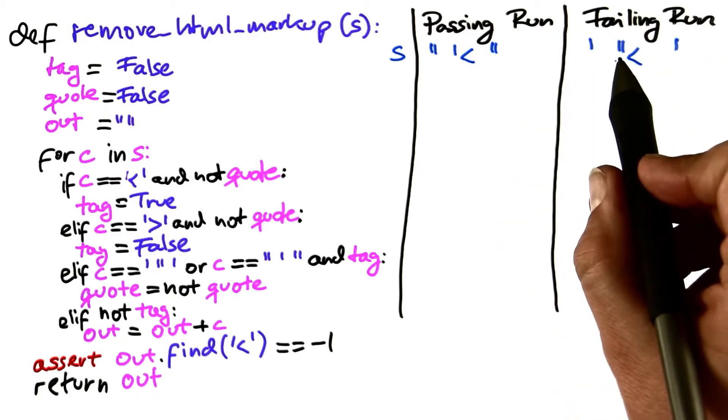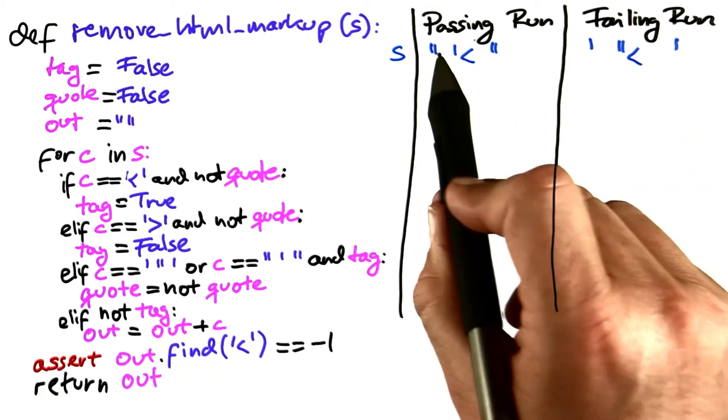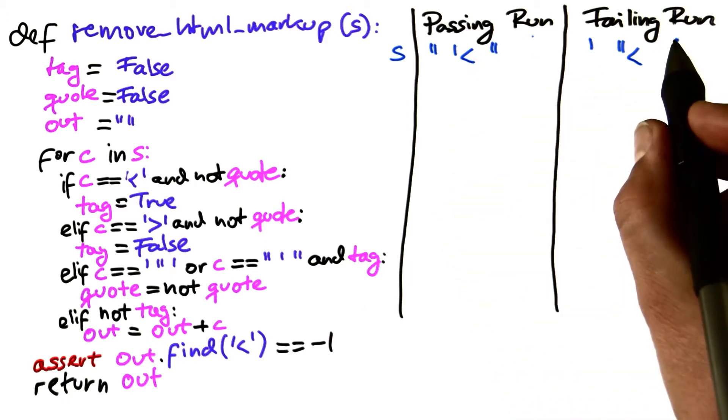However, if it's a double quote followed by a less than sign, it fails. So this difference in the original input determines whether the run passes or fails.